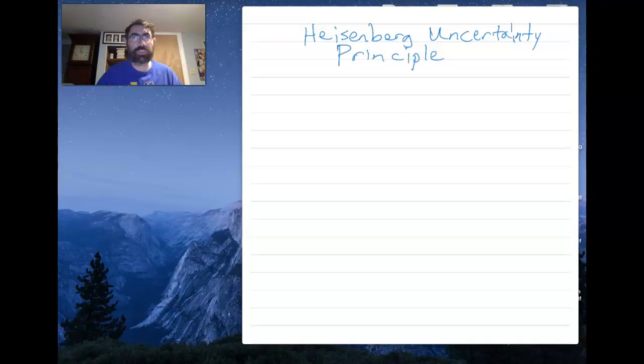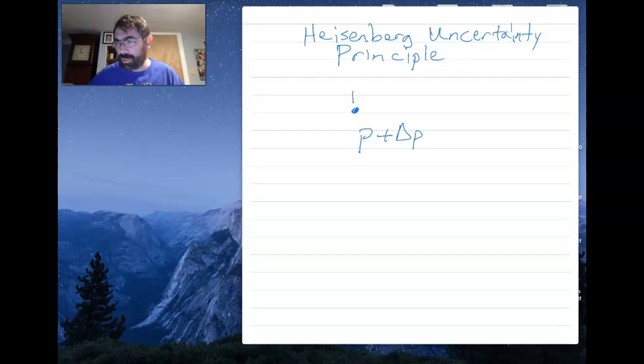So I can pick any position I want. I can have my particle at this position right here, but the momentum it has now, the measured momentum, has some uncertainty to it. And if this position is really small, if my knowledge of that position is really small, then my knowledge of the momentum is large.